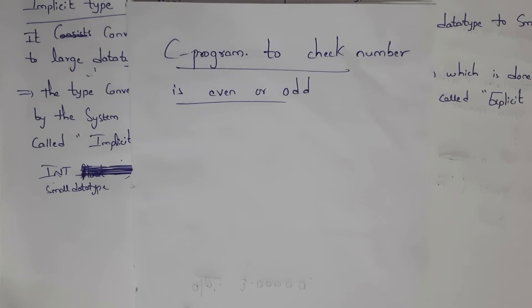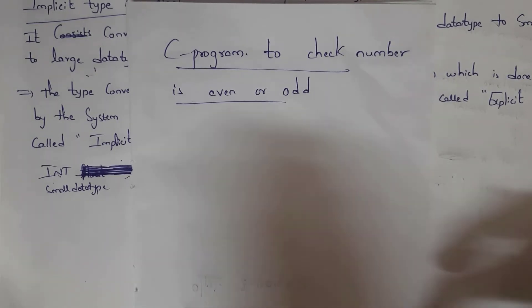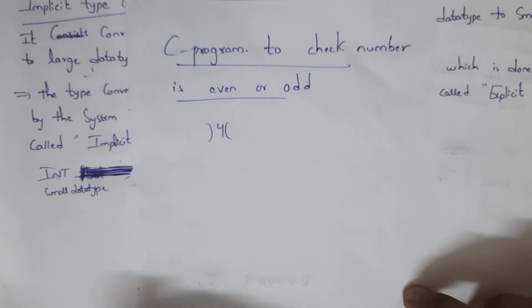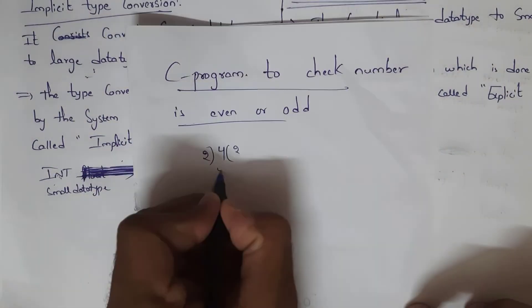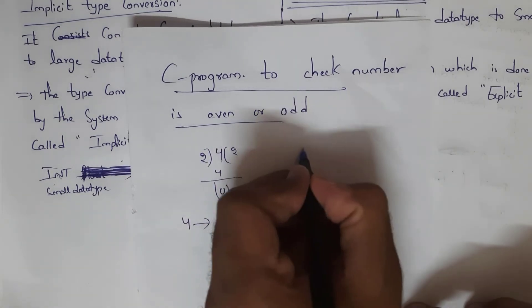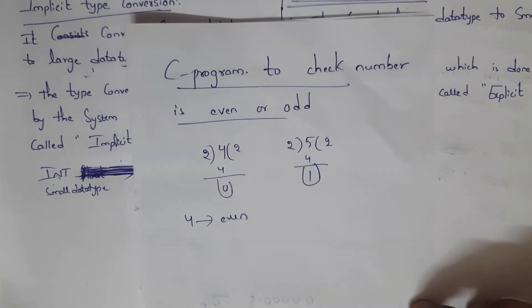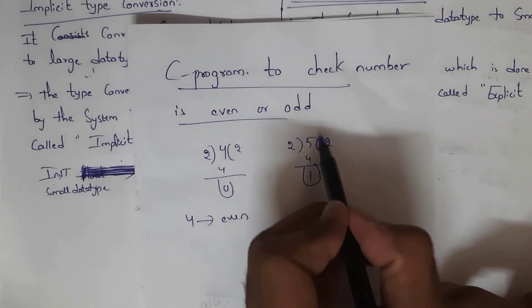Next, I will explain the C program to check whether a number is even or odd. First, you need to know what is an even number and what is an odd number. If we divide any number by 2 and get a remainder of 0, we call it an even number; else we call it an odd number. For example, 4 divided by 2 gives remainder 0, so 4 is an even number. For 5, dividing by 2 gives remainder 1, so 5 is an odd number.